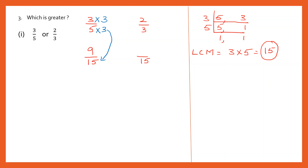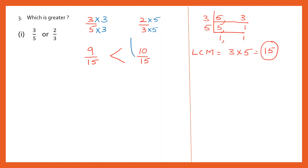Moving to the next fraction: 3 into 5 is 15, so my denominator became 15. I multiply the numerator also by 5. 2 fives are 10. Now we have like fractions — look at the two numerators. The greater numerator is the greater fraction. 10 by 15 is the greater fraction, which corresponds to the second fraction. So 2 by 3 is greater.